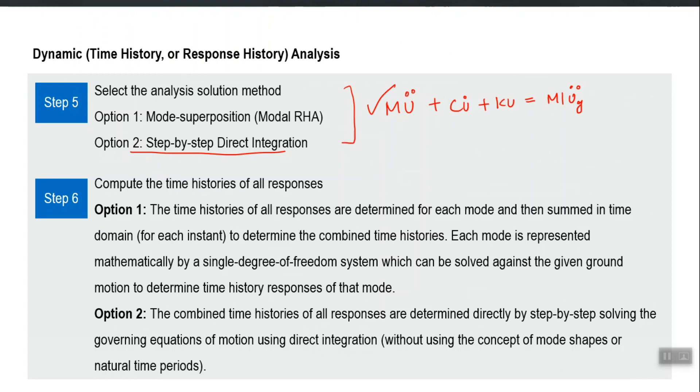Nowadays, HHT is most commonly used. Option two is based on direct computation of the dynamic response, it directly solves this equation. It is not based on computing the response for each mode separately and then sum them.